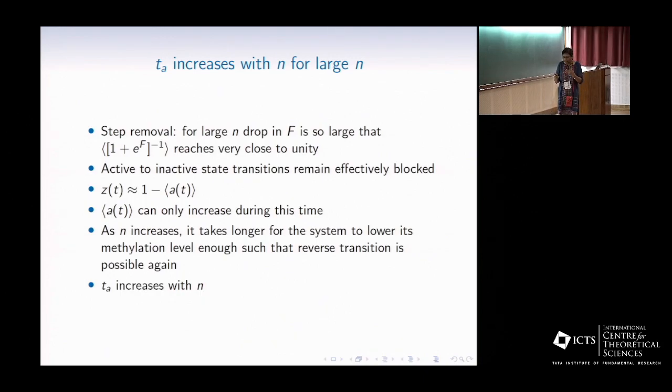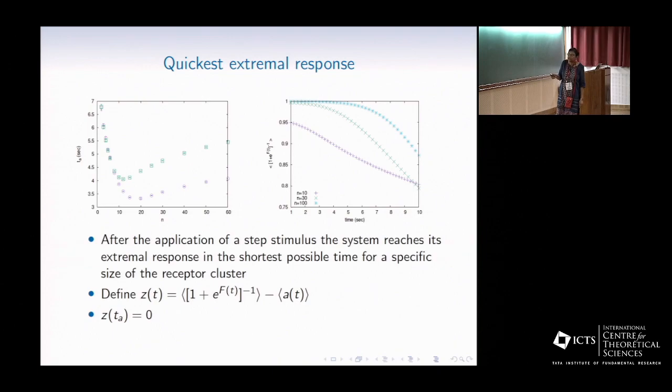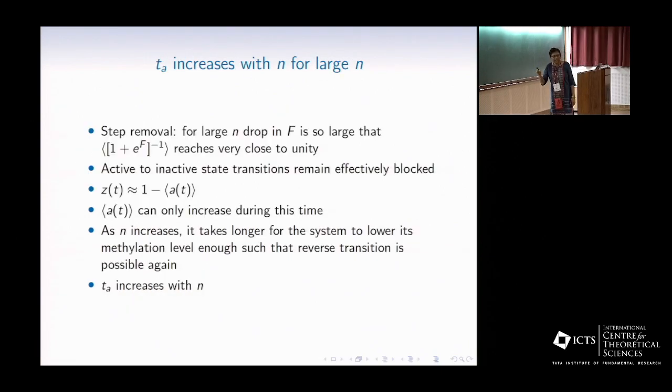Only the reverse transition is possible, and therefore activity can only increase during this time. When n becomes larger and larger, this transition remains blocked for a longer period, as shown in this plot. For larger value of n, it remains stuck to unity for a longer period of time. So therefore, t*, which marks the point where the derivative just reverses sign, t* increases with n.